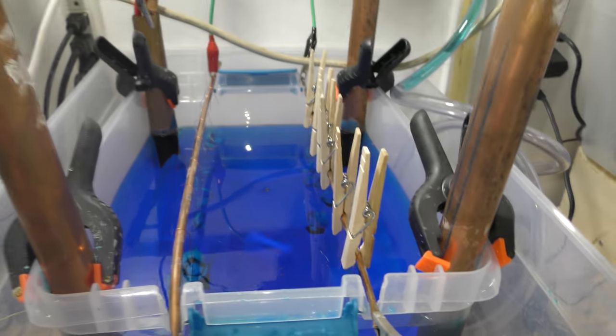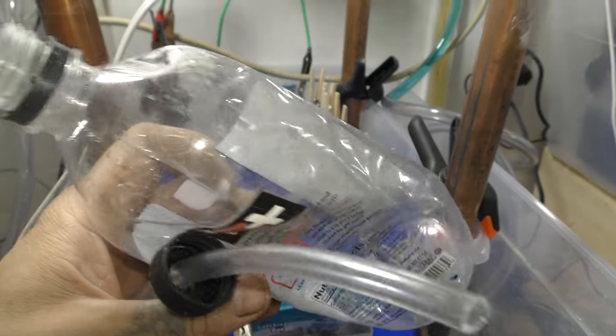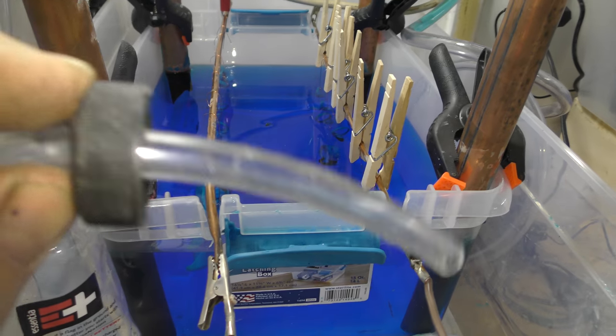So what you do is you find yourself a pop bottle. It does not matter how beat up this pop bottle is, in fact it will get even more beat up. Drill a hole in the lid and get yourself some clear tubing.